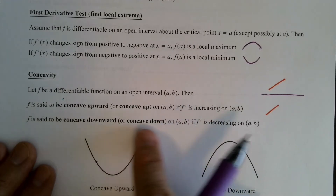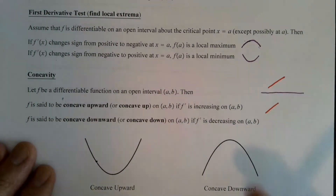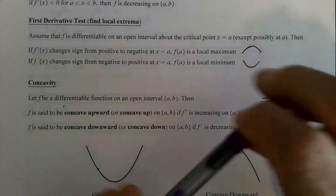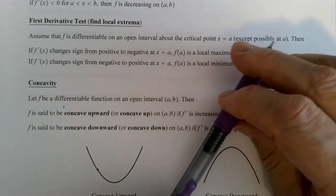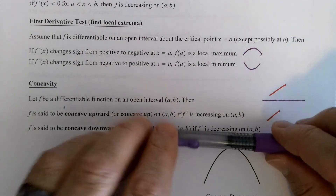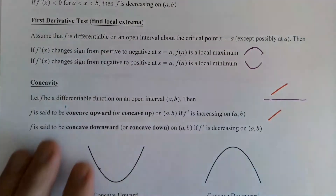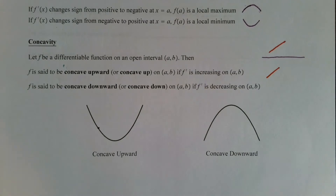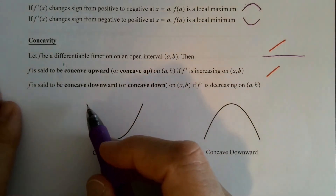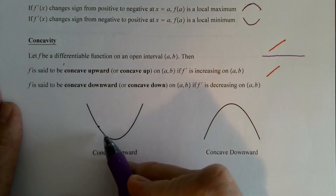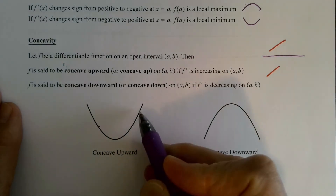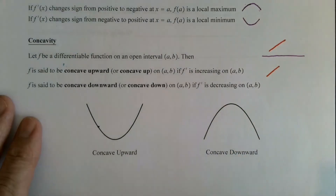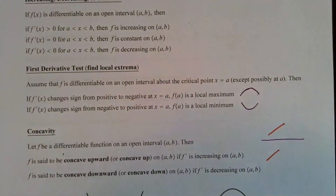A function is concave downward on an interval if its derivative is decreasing. Moving from left to right, that slope decreases — from a big positive number getting less positive, all the way to zero, then becoming negative and more negative. That's concave down — a frown. Keep in mind, a function can be concave up and decreasing, concave up and increasing, concave down and increasing, or concave down and decreasing.